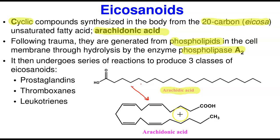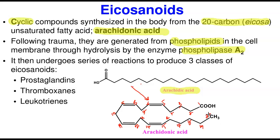Looking at the structure of arachidonic acid, it has 20 carbons with four double bonds: between carbons 5 and 6, between carbons 8 and 9, between carbons 11 and 12, and between carbons 14 and 15. The effect of these double bonds is that they cause bending, and because there are four of them, the molecule folds back on itself, appearing almost circular. The enzyme phospholipase A2 converts arachidic acid into arachidonic acid.